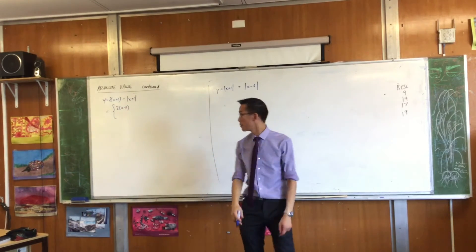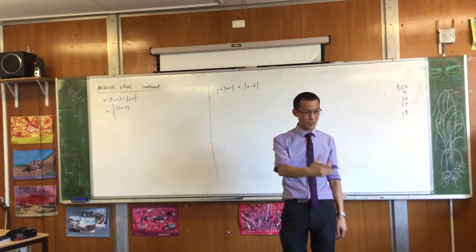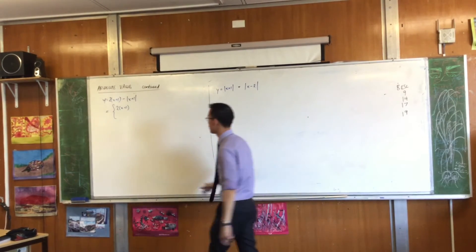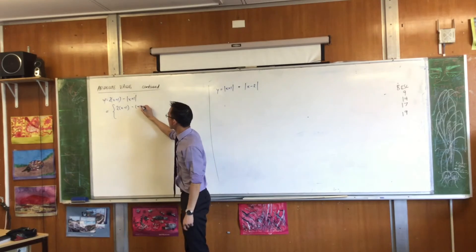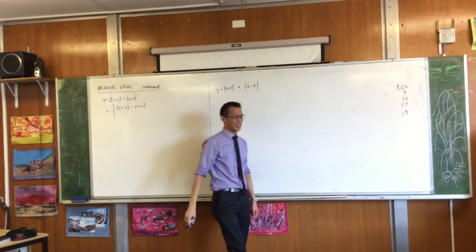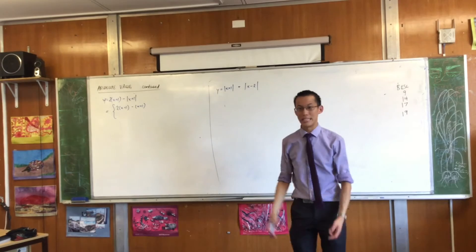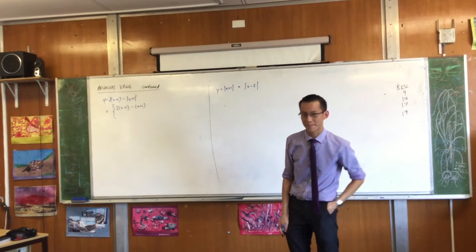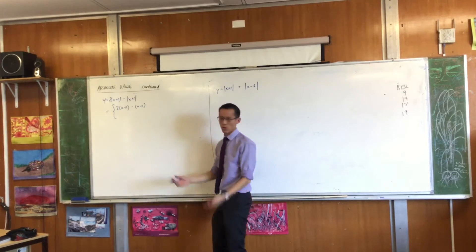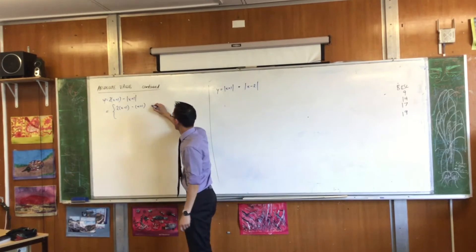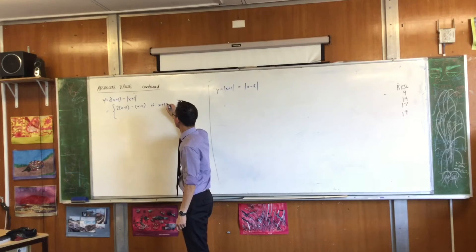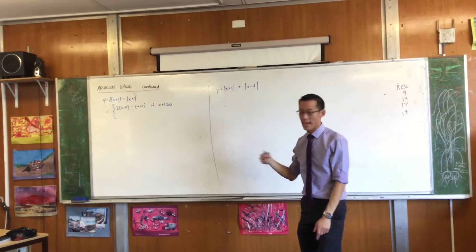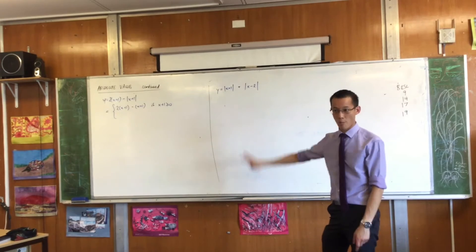The first part has no absolute value, so I'm not going to touch it. However, when I move to the next part, there are two cases — two versions, like Jekyll and Hyde. Sometimes the absolute value of x plus one is just x plus one. When is that? When x plus one is positive — or zero, it doesn't really matter. So this is what I write, and in shorthand that's when x is greater than or equal to negative one.